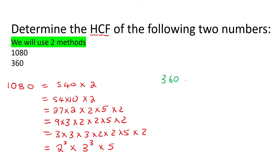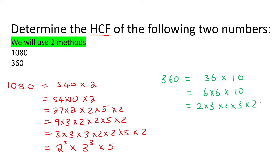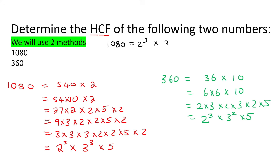Now we're going to take the number 360. We could say that is 36 multiplied by 10, which is the same as 6 times 6, times 10. Six can be broken down into 2 times 3, and so can the other 6. And 10 is 5 times 2. So 360 gives us 2 to the power of 3, times 3 to the power of 2, times 5.